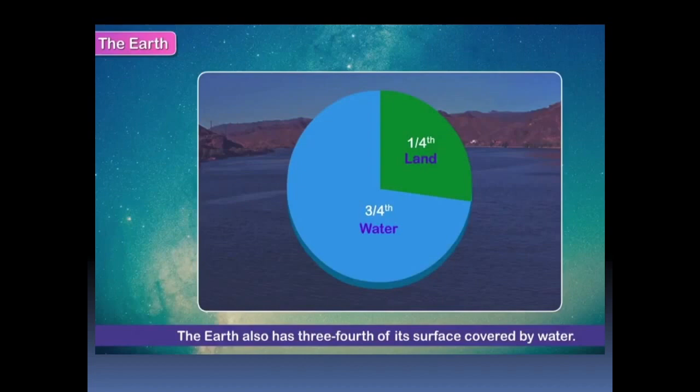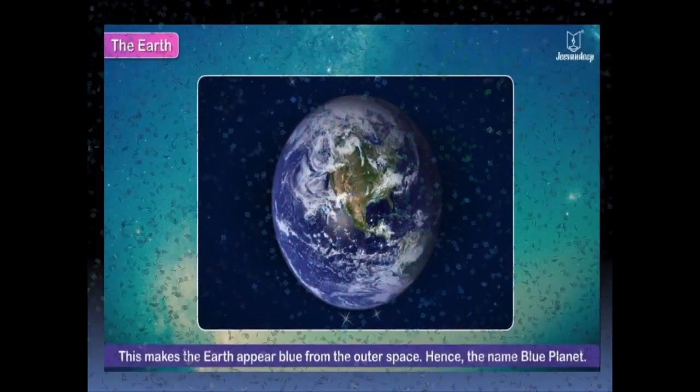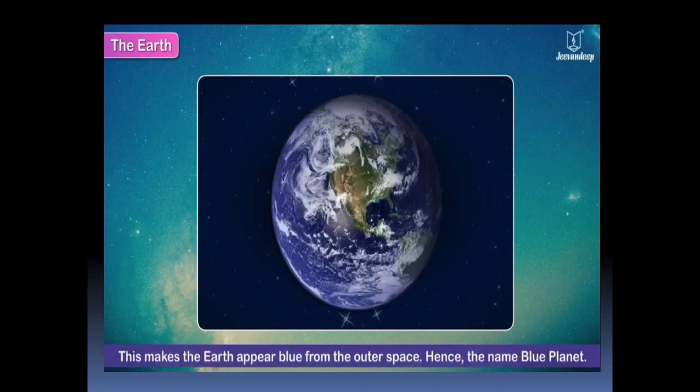The earth has three-fourths of its surface covered by water and one-fourth portion of the earth is land. This makes the earth appear blue from outer space. Hence, the name given is blue planet.